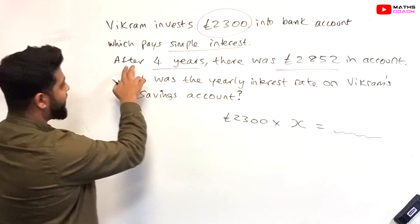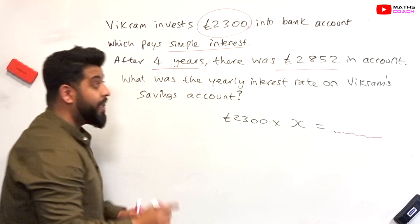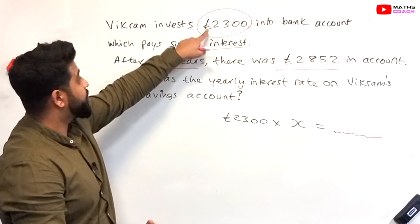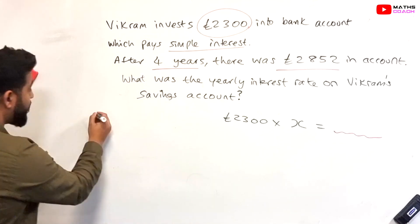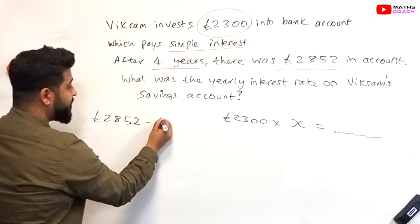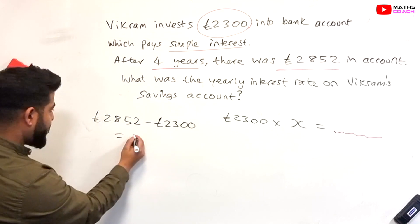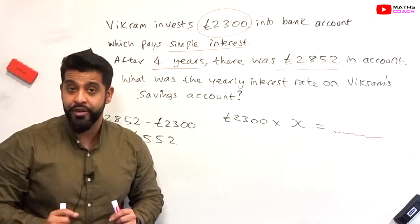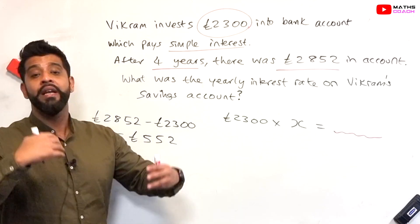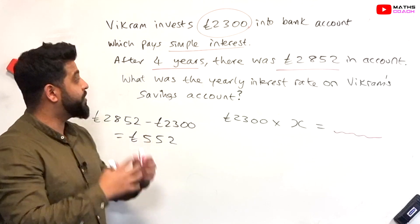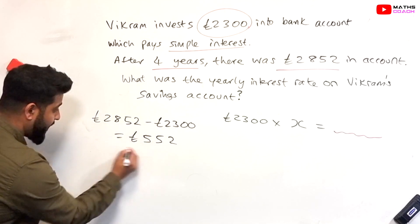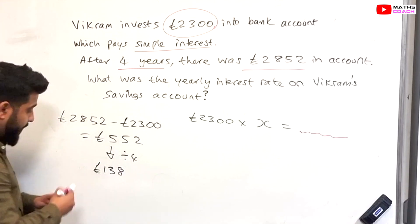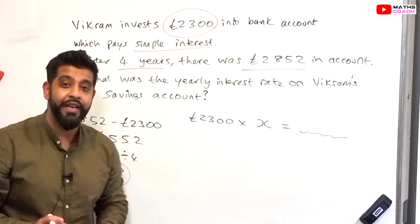After four years there was £2,852 in his account. We compare that to the starting £2,300 and find the difference: £2,852 minus £2,300 equals £552. Since it's simple interest paid on the original amount only, we divide £552 by 4, which gives us £138. So £138 is paid every single year into his bank account.